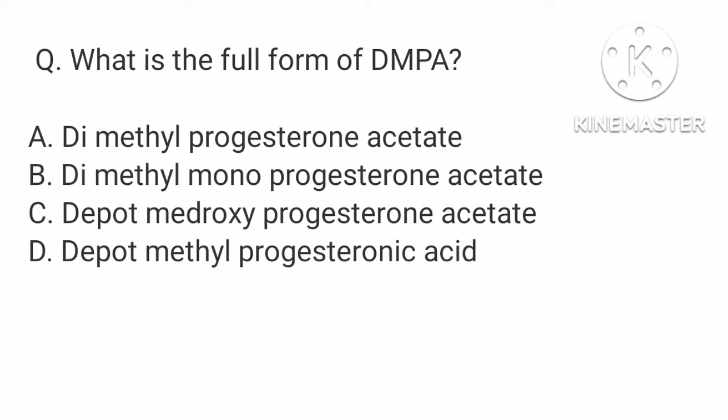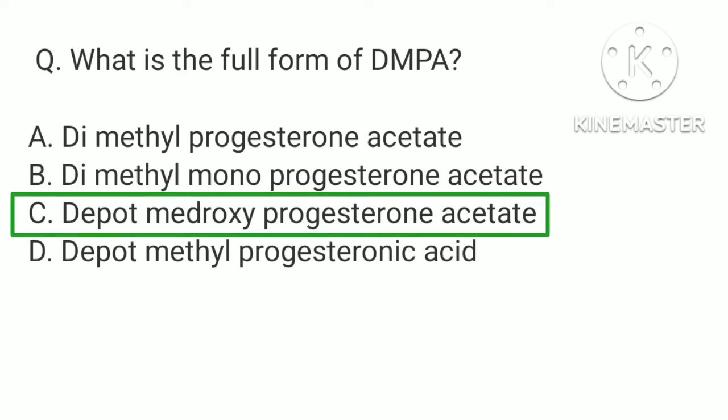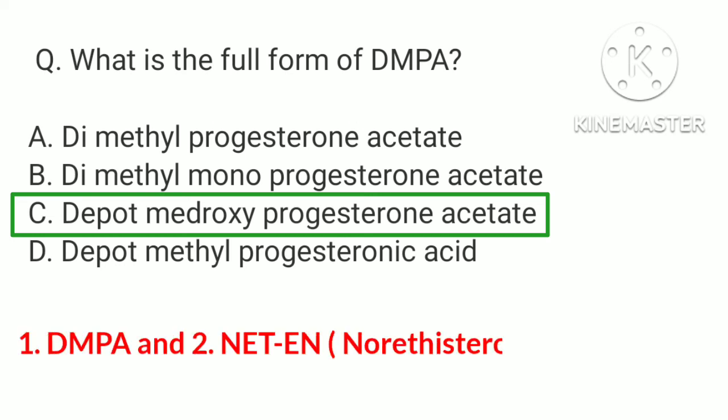What is the full form of DMPA? a. Dimethylprogesterone acetate, b. Dimethylmonoprogesterone acetate, c. Depo-Medroxyprogesterone acetate, d. Depo-Methylprogesterone acid. The correct answer is c. Depo-Medroxyprogesterone acetate. We use only two types of injectable progesterone for contraception: one is DMPA (Depo-Medroxyprogesterone acetate) and the second is NET-EN, that is Nortestosterone Enanthate.